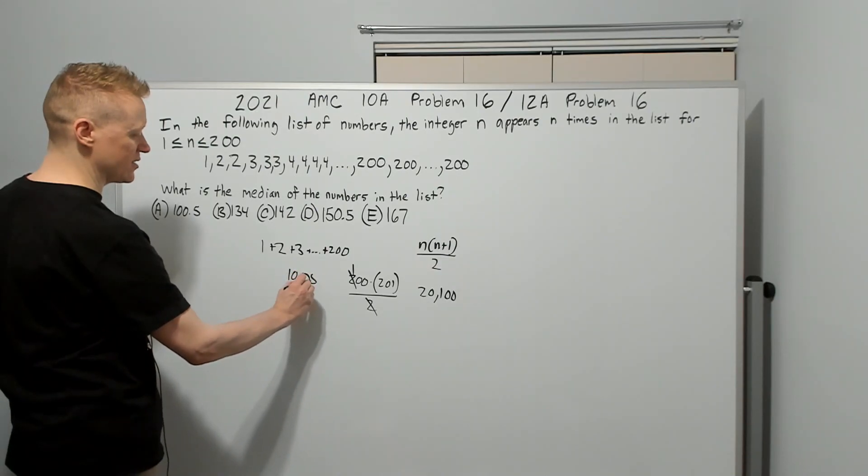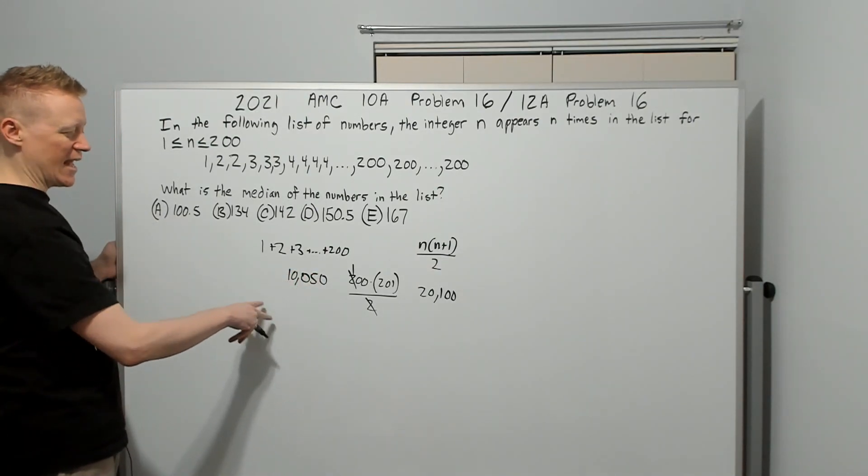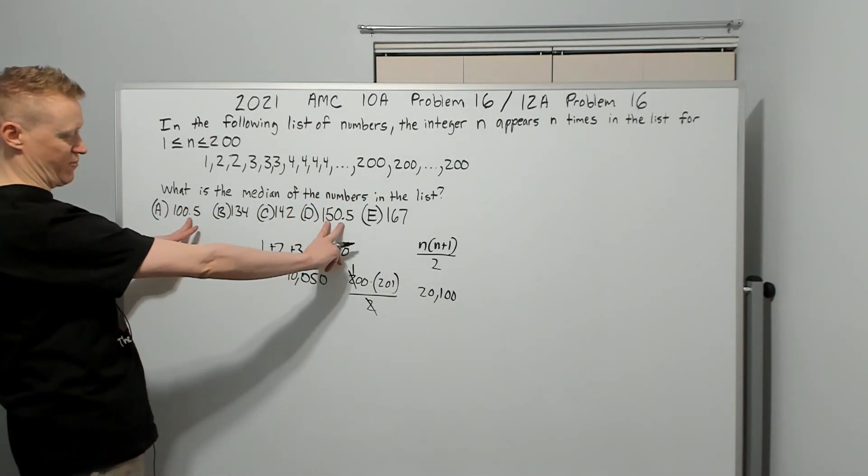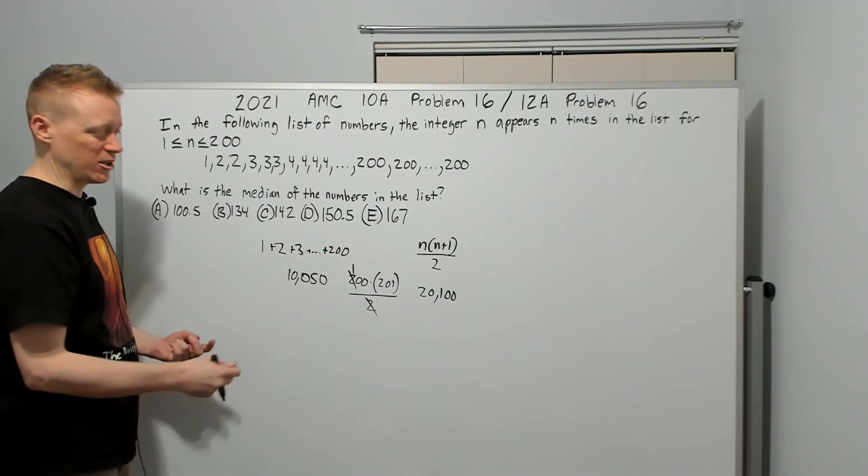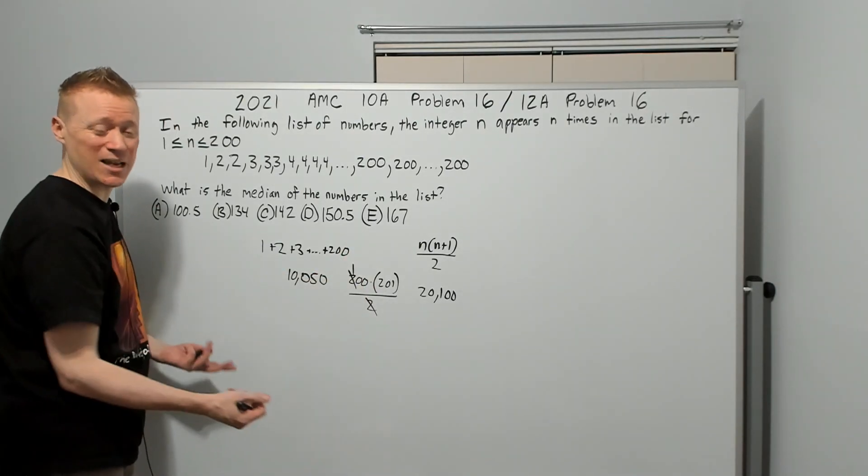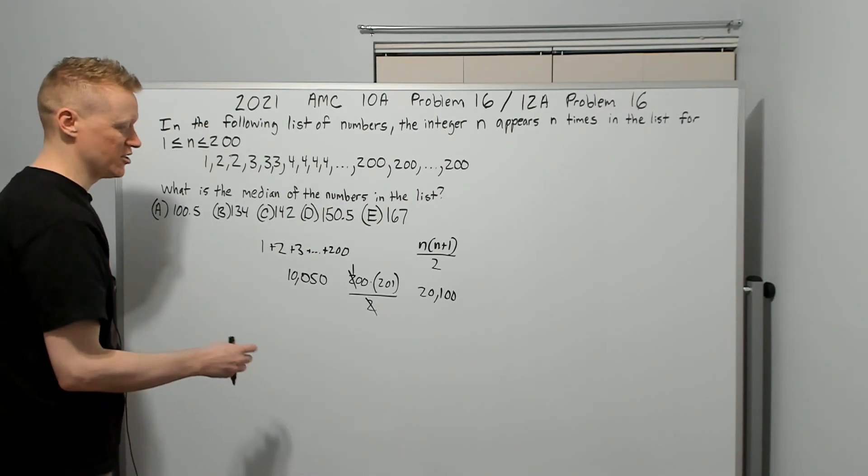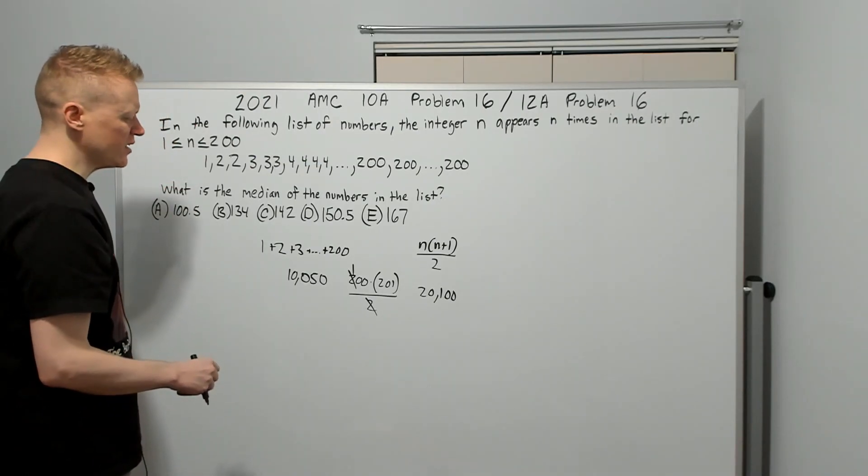And the average of that one and the term right after it. Chances are it's probably going to be an integer—the 10,050th will be an integer and the 10,051st is the same integer. When you average them it's just that integer because you're adding two of the same thing and dividing by 2.